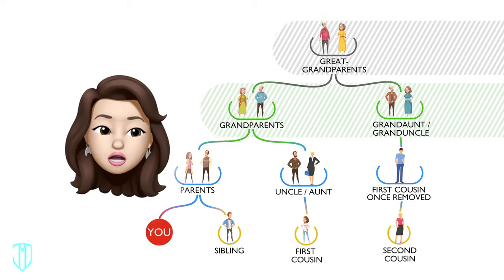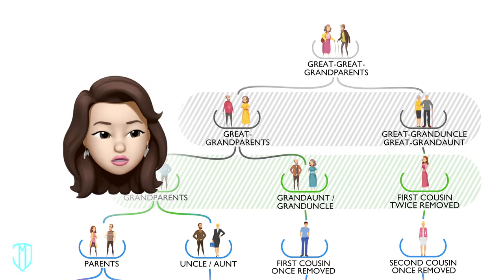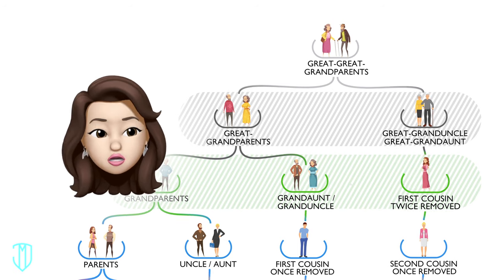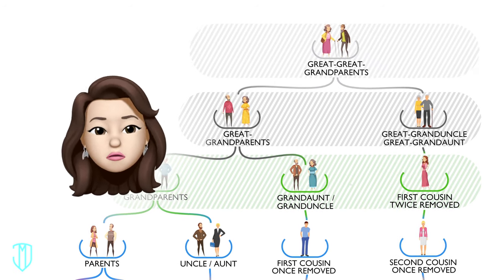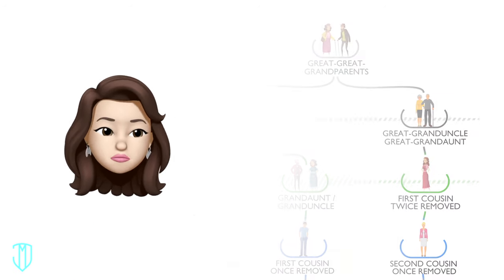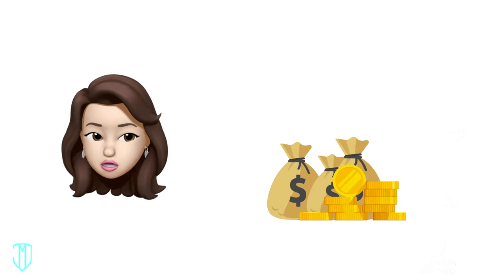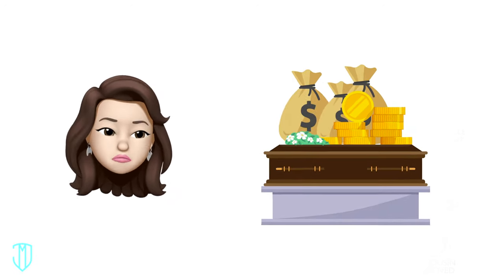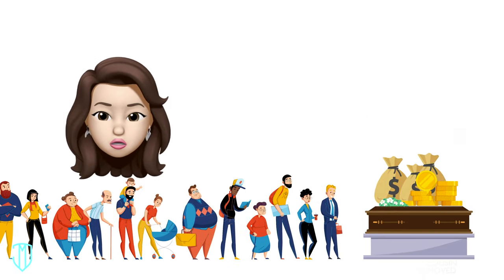Third cousins share a great great grandparent. Your great great grandparent is two generations from your grandparent. Most people never meet their third cousins and beyond — well, unless you're crazy rich and at their deathbed, and then you'll meet your third cousin and maybe even a fourth cousin you never even knew you had.